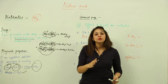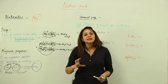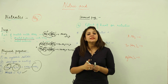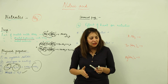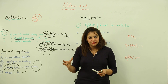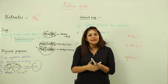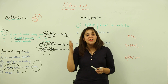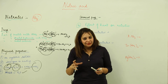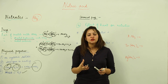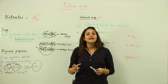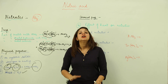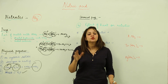Regarding color: most metal nitrates are white, with notable exceptions. Copper nitrate is blue. Ferrous nitrate (Fe2+) has a light or dirty green color. Ferric nitrate has a reddish-brown color. So generally all metal nitrates are colorless or white, except copper, ferrous, and ferric nitrates.